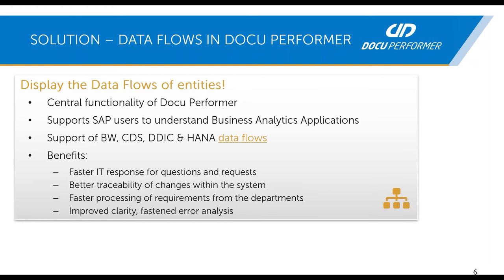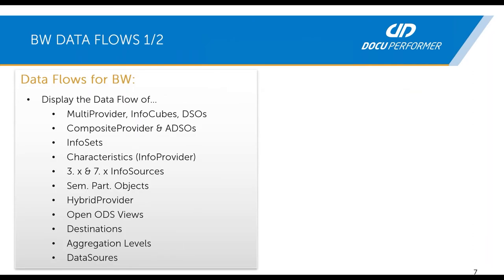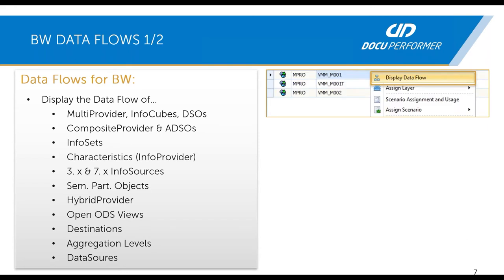Let's take a detailed look at which object types are supported by DokuPerformer. On the left side, we start with the BW component. We support the data flow functions for the old BW objects like multi-provider, info-cubes, and DSOs. We also support the functions for the new BW 4HANA object types like composite provider and RDSOs, and for many other object types like destinations, data sources, and so on. You can open the data flows really quickly by using the context menu and clicking on 'display data flow'.